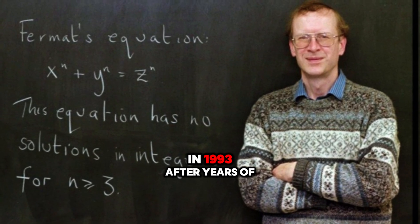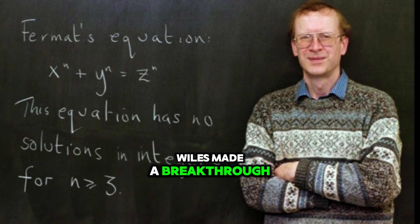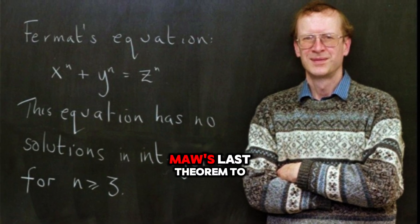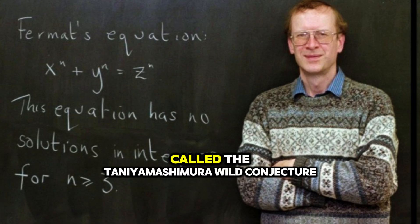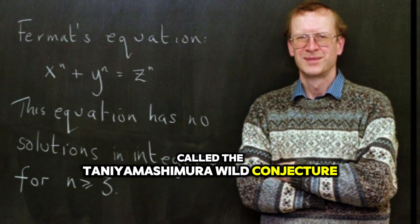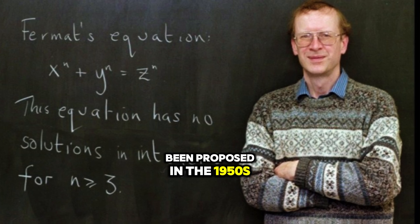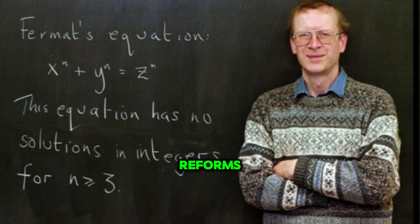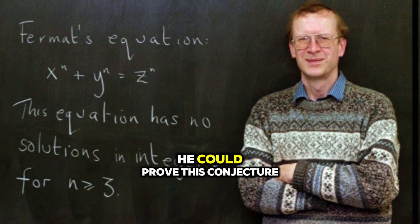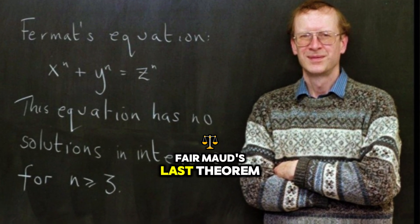In 1993, after years of hard work, Wiles made a breakthrough. He found a way to connect Fermat's Last Theorem to another unsolved problem in mathematics called the Taniyama-Shimura-Wile Conjecture. This conjecture, which had been proposed in the 1950s, suggested a link between elliptic curves and modular forms. Wiles believed that if he could prove this conjecture, he could also prove Fermat's Last Theorem.